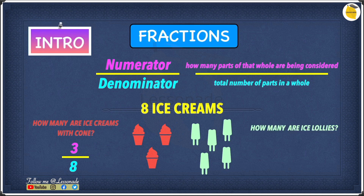Now for the next question: how many are ice lollies? We have 5 ice lollies and 8 ice creams total, so the denominator is again 8. Since there are 5 ice lollies, the numerator is 5, meaning the fraction is 5 over 8.